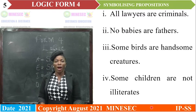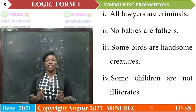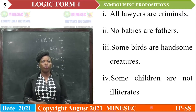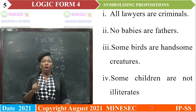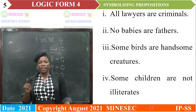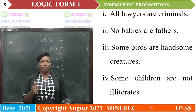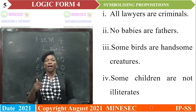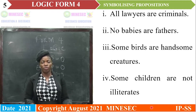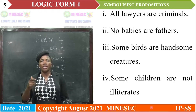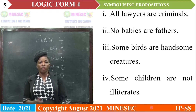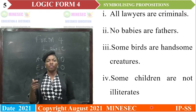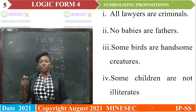The propositions are: 1. All lawyers are criminals. 2. No babies are fathers. 3. Some birds are handsome creatures. 4. Some children are not illiterate.